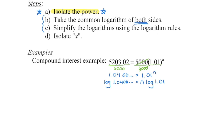Our goal in algebra is always to isolate the variable, so we want to get n by itself. We have n times the log of 1.01, so the opposite of multiplication is division. We divide out log(1.01) on both sides. The log(1.01) divided by log(1.01) equals 1, leaving us with just n. In your calculator, take the log, press second function answer to get that whole value, divide by log(1.01), and get your solution.